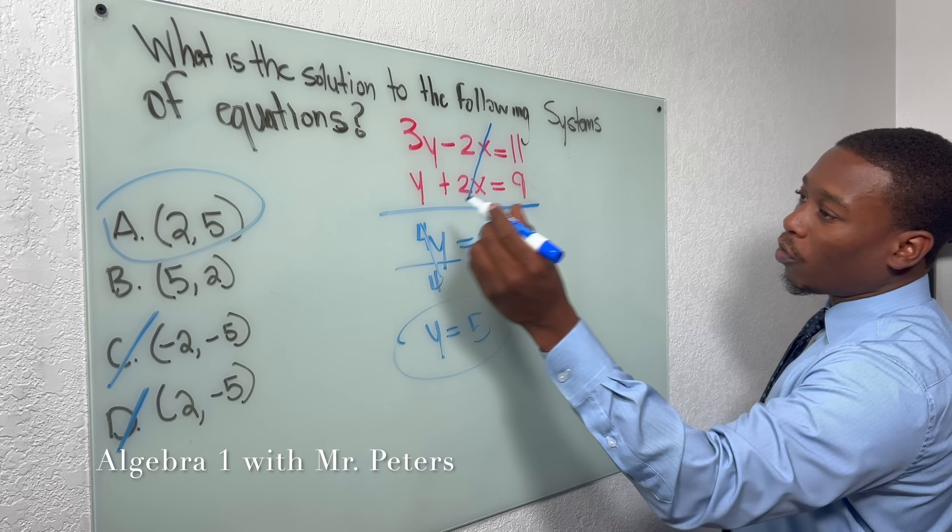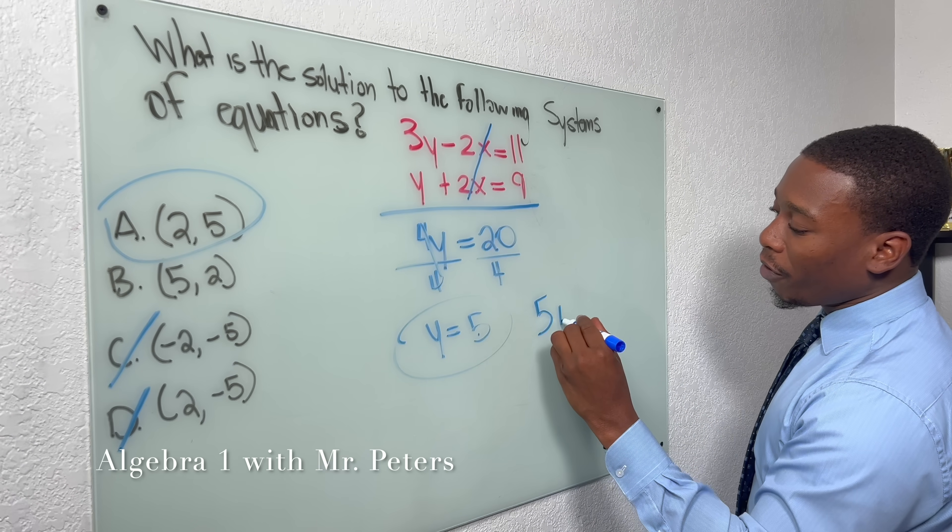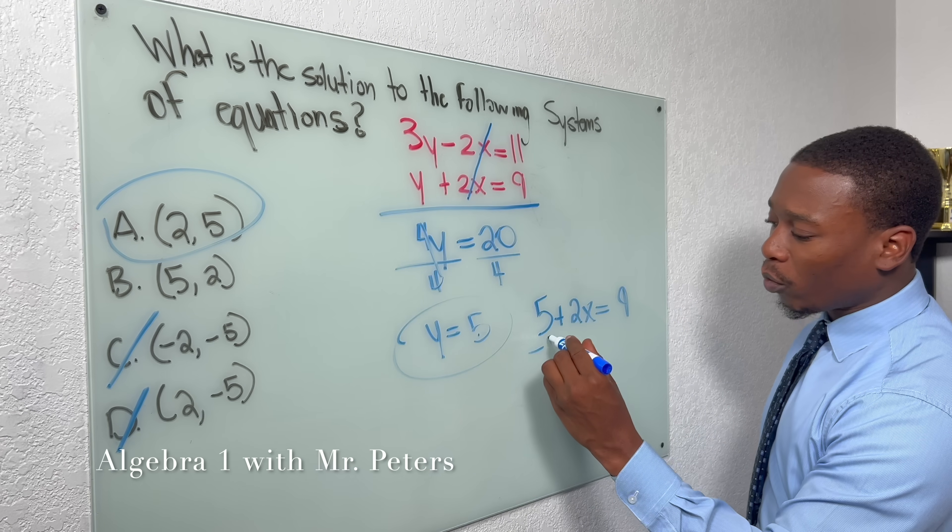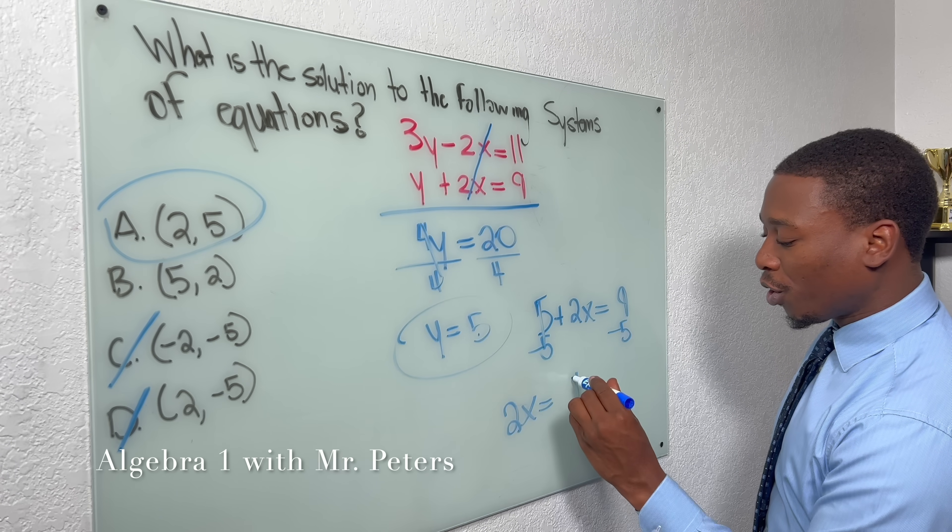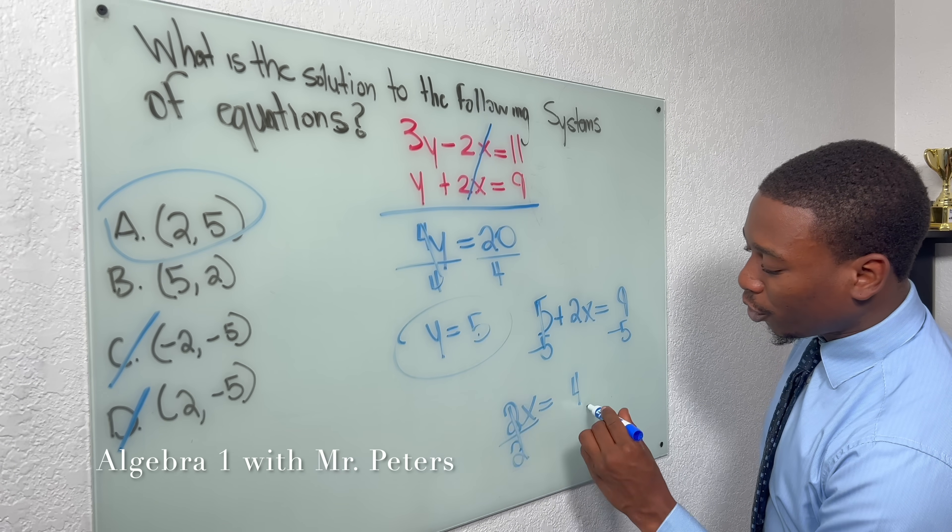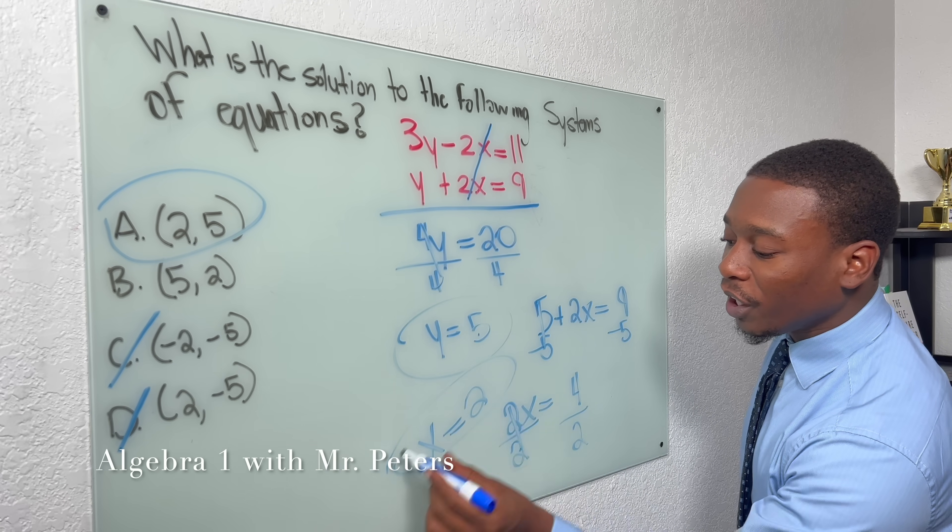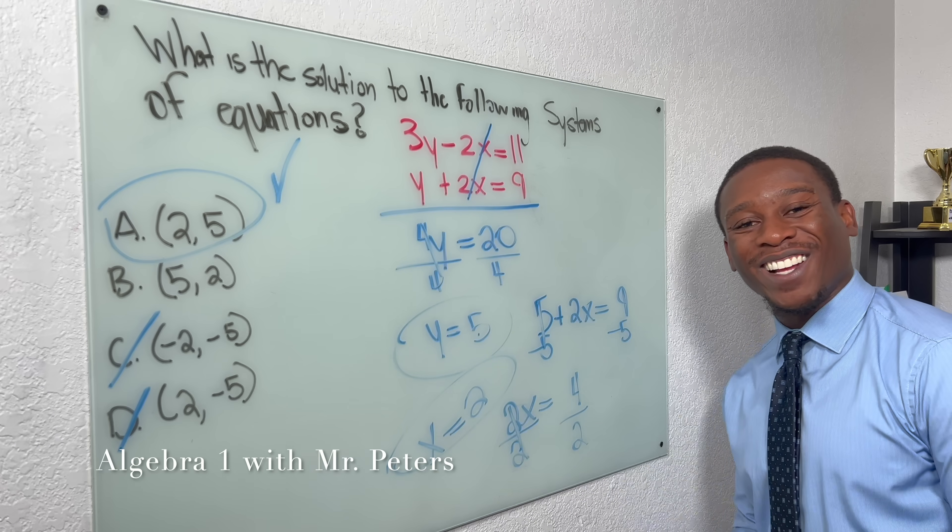So now we're going to go back and we're going to solve. We're going to plug y in for 5. So we say that 5 + 2x is equal to 9. Right? We're going to solve like a regular equation. 2x is equal to 4. Once we divide by 2, we know our x-coordinate is going to be equal to 2. So we double-check to make sure that our answer is correct.